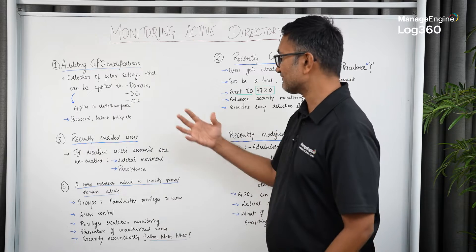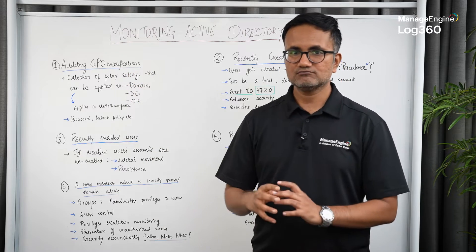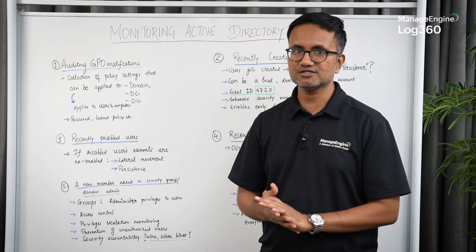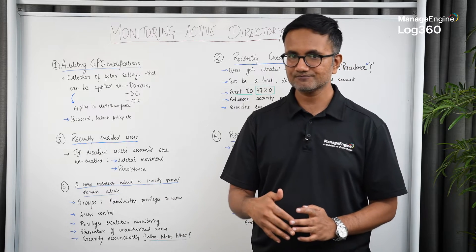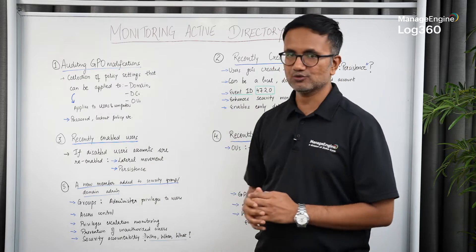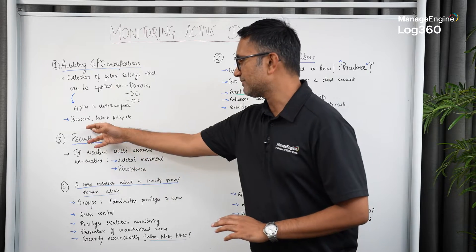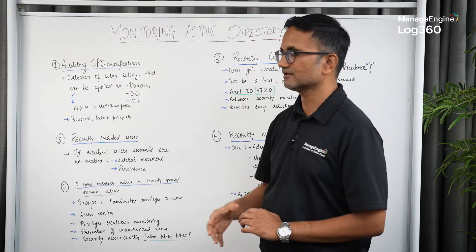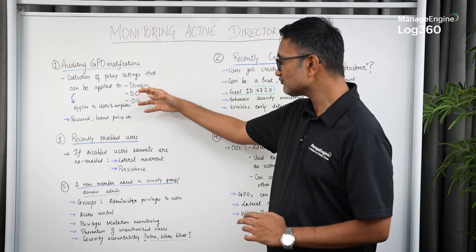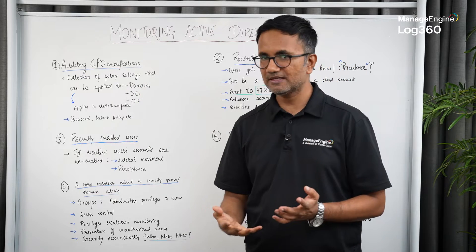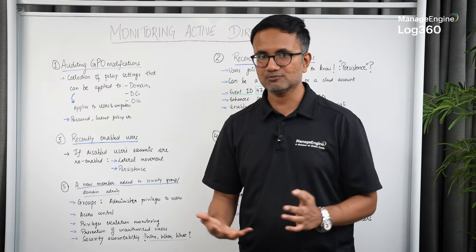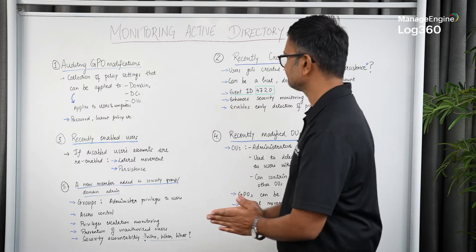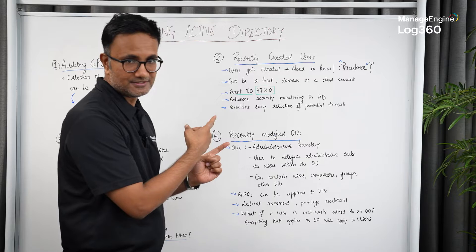A change that happens to your Group Policy Object — you need to monitor that. What if it's a malicious change? What if an attacker finds their way into Active Directory and makes a change on your GPO? Policy settings like your password policies and lockout policies can get changed, and that can be applied to everything within that administrative boundary — a domain, DC, or OU. So you've got to monitor that and be alerted. That is why auditing GPO modifications is very critical.